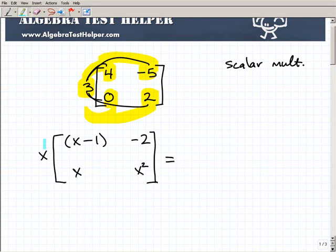Okay, well, if you recognize what's going on, you have a value. It could be a number or variable outside of this matrix. So I'm going to take this particular value, which is x. I'm going to multiply it by each one of these entries here. So let's go ahead and do that.